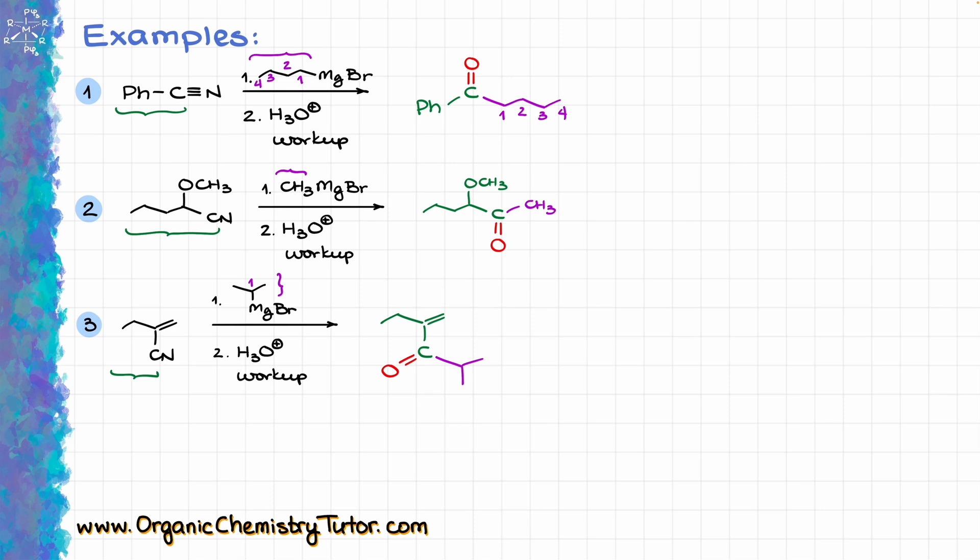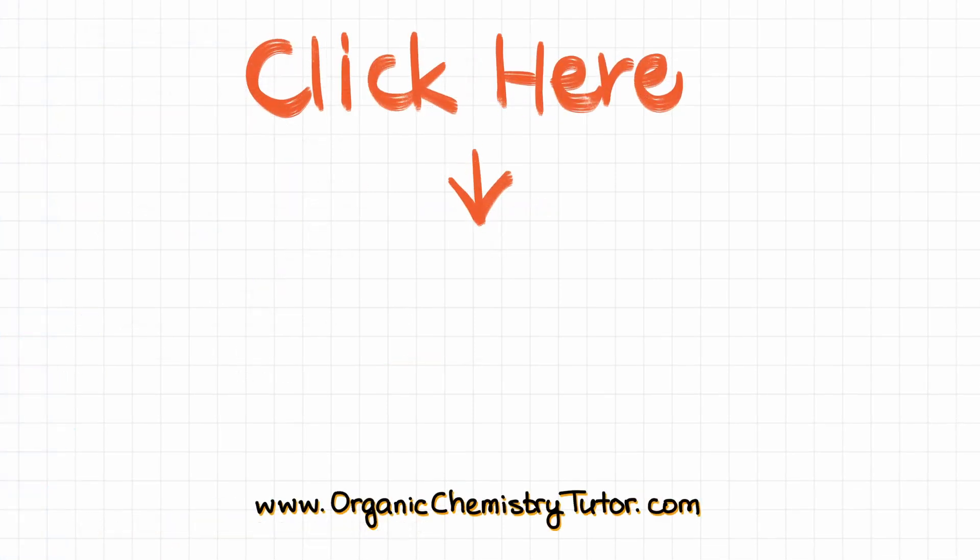So as you can see, the reaction of nitrile with the Grignard reagent is a fairly simple reaction, although it does have a little bit of an intimidating mechanism. It is also a very powerful synthetic tool to make ketones in your multi-step synthesis, so that is definitely something that you need to keep in mind when thinking about multi-step synthesis for your homework or exam. And if you want to learn more about the other reactions of the Grignard reagent and how to make it, check out this video next!